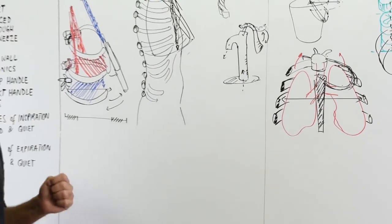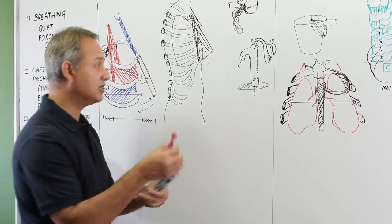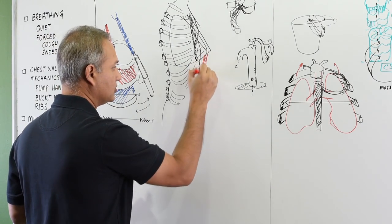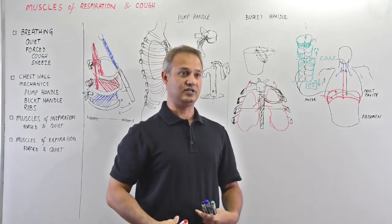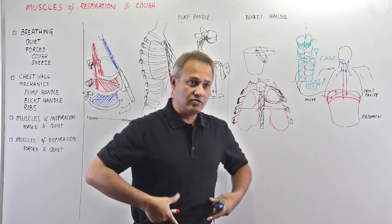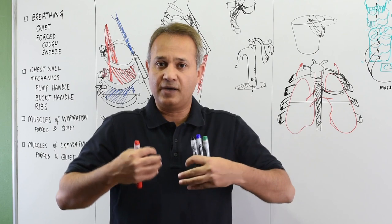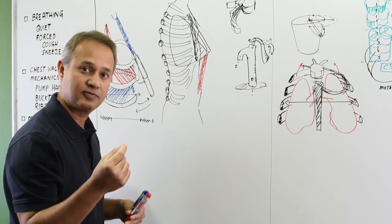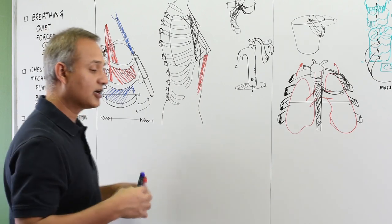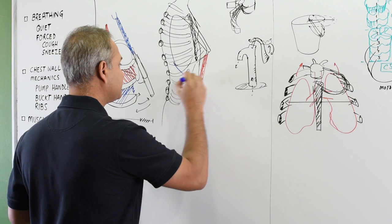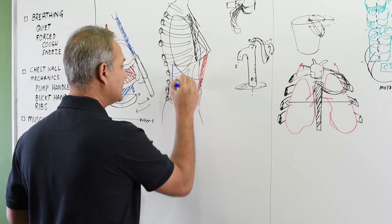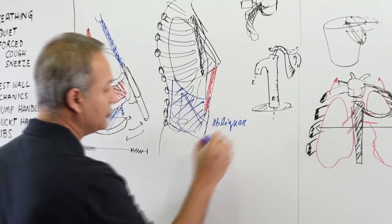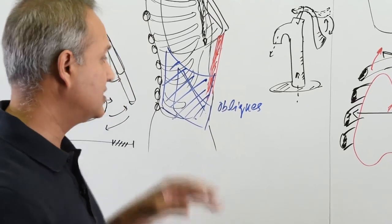For forced expiration, the primary muscles are the internal intercostals and the rectus abdominis — the six-pack muscles. The rectus abdominis contracts, squeezing the abdomen, pushing viscera upward, pushing the diaphragm up, reducing the chest cavity, and expelling air. In addition, for coughing, the external oblique and internal oblique also play a role — obliques are the primary muscles of coughing.